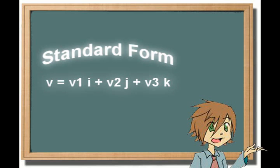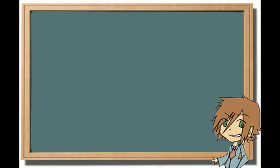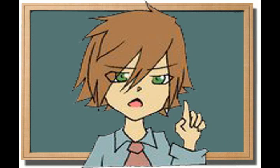To put standard form into component form, you take the coefficients of v1, v2, and v3, and put them into angle brackets, like so. For example, if our standard form equation is v equals 2i plus 7j plus k, then the component form will look like this. You got that?